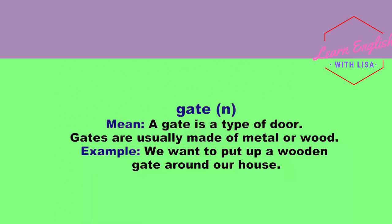Gate. A gate is a type of door. Gates are usually made of metal or wood. We want to put up a wooden gate around our house.